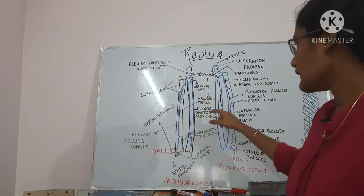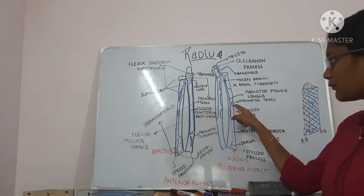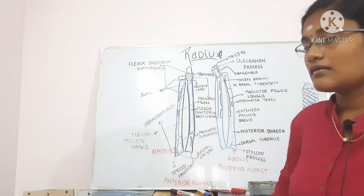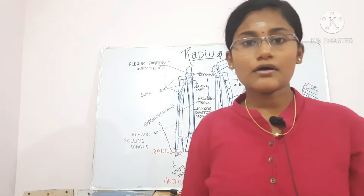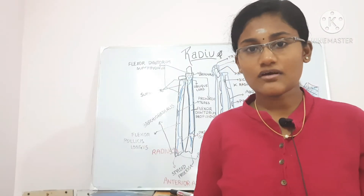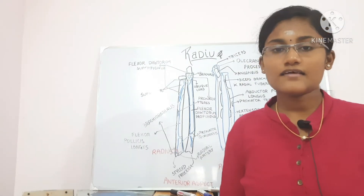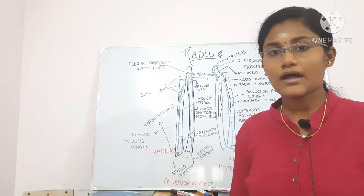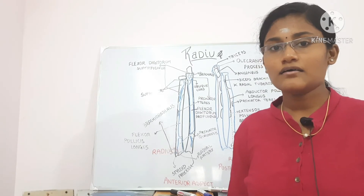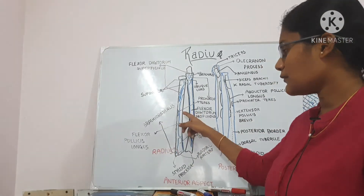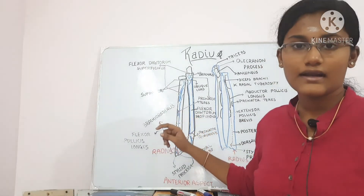The lateral surface gives attachment on its middle part to the pronator teres muscle. Now let's move on to the ossification of the shaft: there is one primary center which occurs in the shaft in the 8th week of intrauterine life.